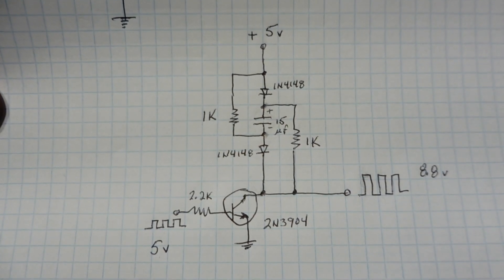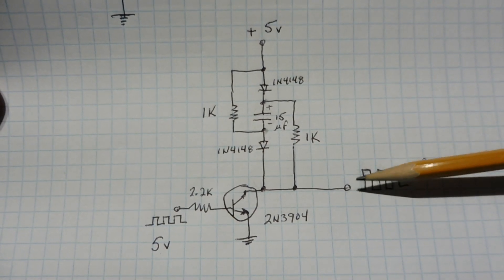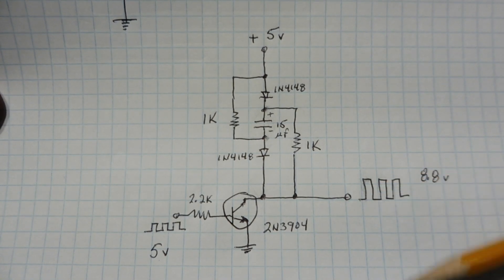Now this circuit has limitations. We only have so much charge on this capacitor, and it's fed through a 1k ohm resistor to the output, so we can load it down very easily. We have to make sure that what we're feeding will be a high impedance.